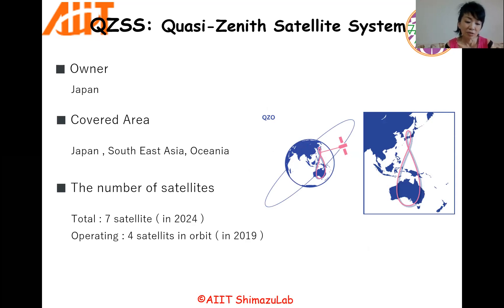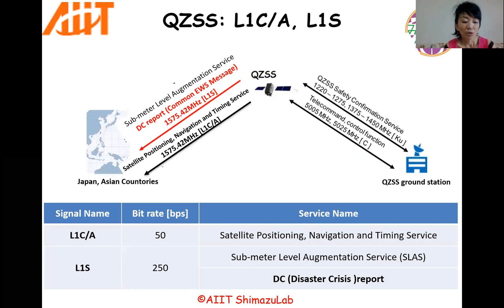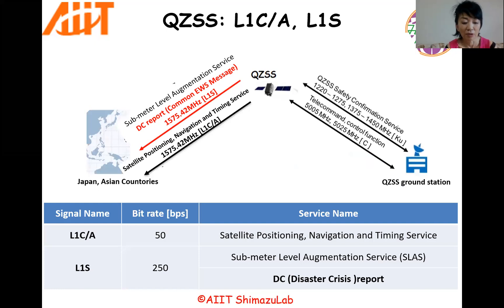It doesn't cover only Japan, but also Southeast Asia and Oceania. It's operated by four satellites in orbit.